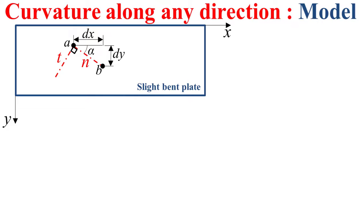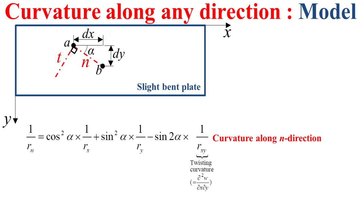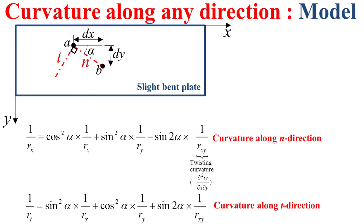Based on the same model of the slightly bent plate, we can determine the curvature along any direction. The curvature along the n direction is given by the formula that you see now in this slide. Rxy is the twisting curvature associated to the x and y directions. We can also determine the curvature along the t direction, as indicated by the formula at the bottom of this slide.